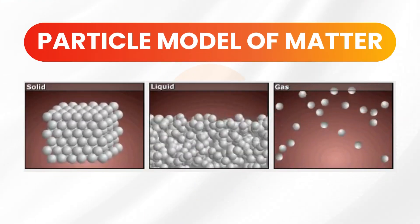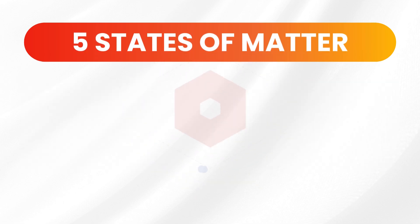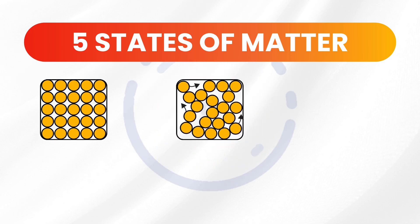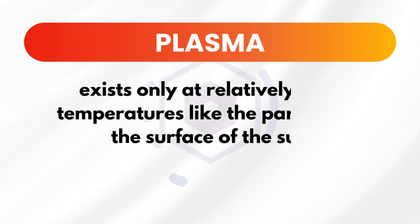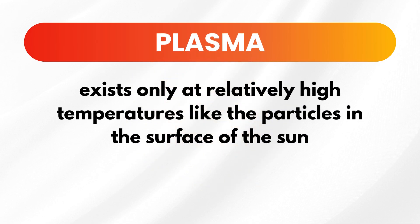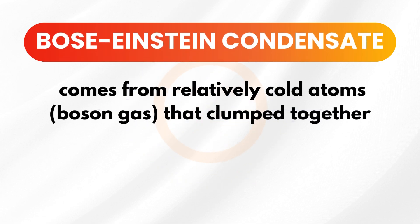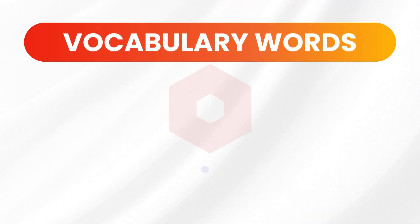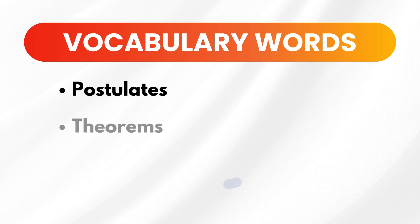Last time, we discussed the particle model of matter expanding on what we know in its three phases. However, there are five states of matter namely solids, liquids, gas, plasma, and Bose-Einstein condensate. Plasma exists only at a relatively high temperature, like the particles on the surface of the sun. Bose-Einstein condensate, on the other hand, comes from relatively cold atoms that clump together. Before we jump into the kinetic molecular theory, let's first understand two important terms: postulates and theorems.